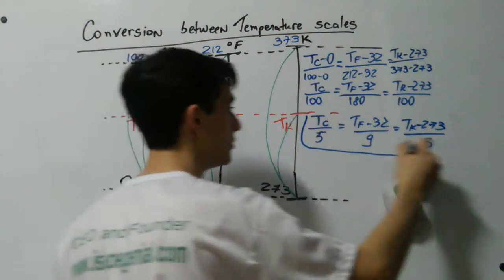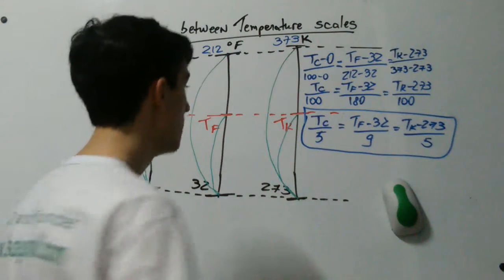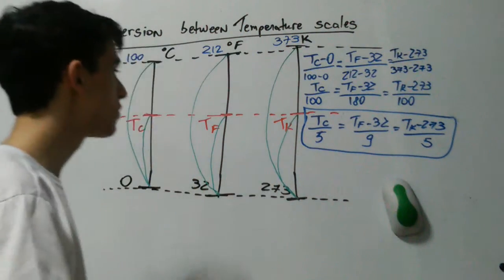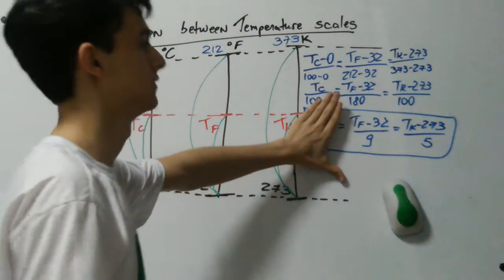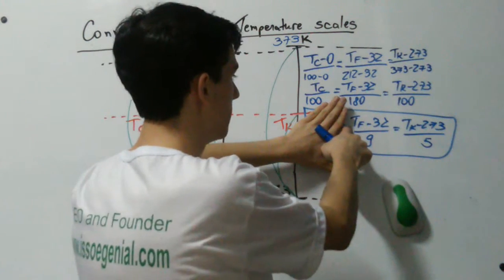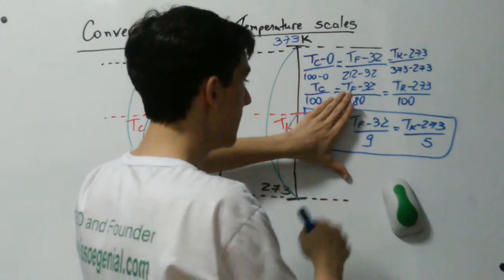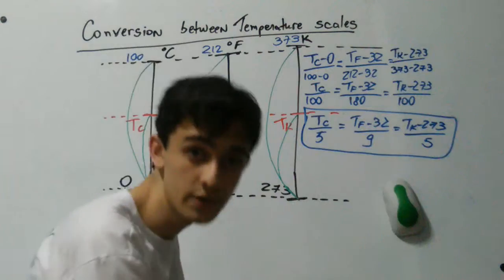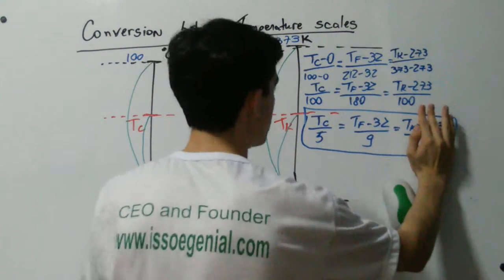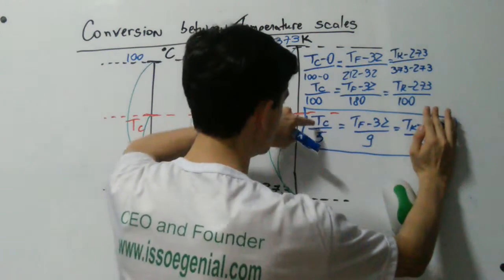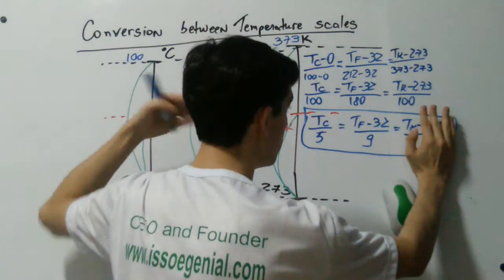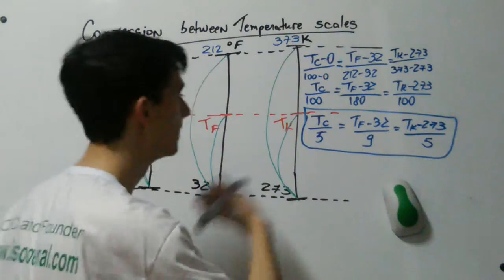This is the relation we were seeking — relating the temperatures in the three scales. For example, if you have a temperature in Fahrenheit and you want to convert it to Kelvin, you forget about the Celsius. You get your Fahrenheit temperature and plug it into Tf, giving you an equation with only Tk as a variable. Solve for Tk and you have the temperature converted to Kelvin. Similarly, if you have Celsius and want Fahrenheit, plug Tc in and solve for Tf.